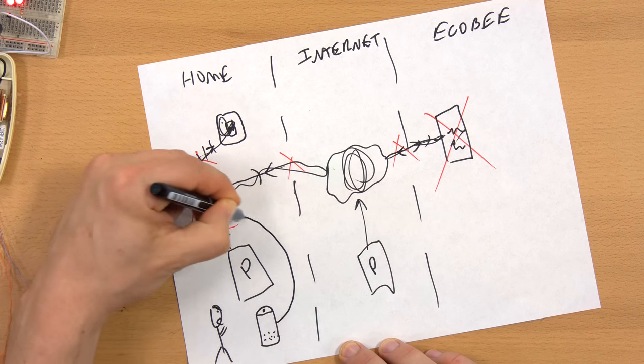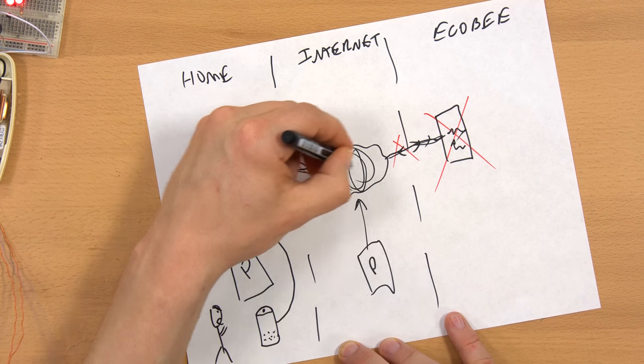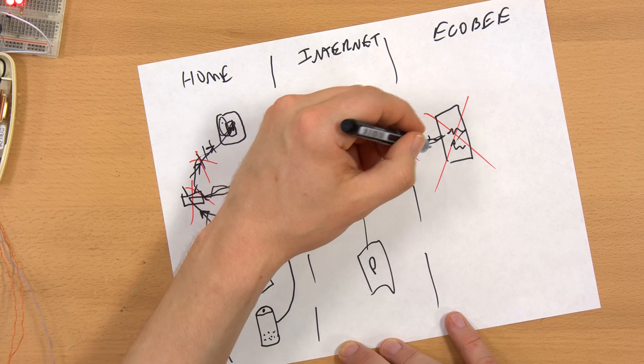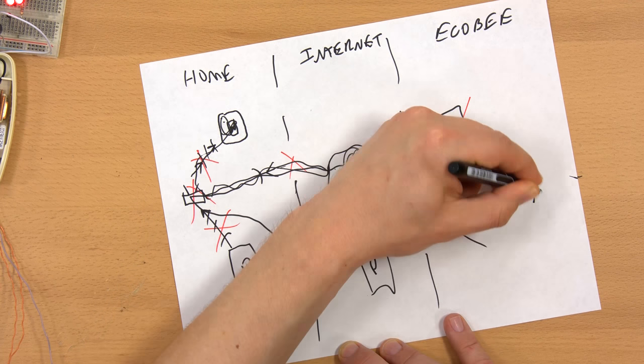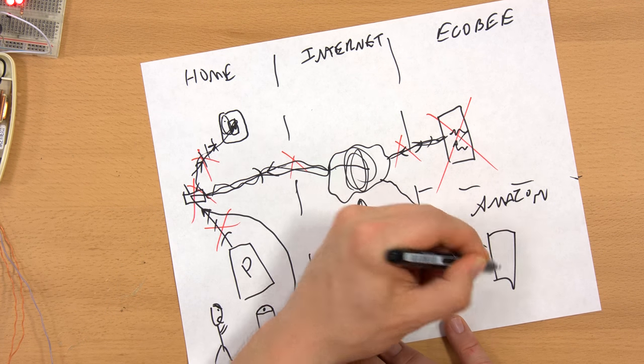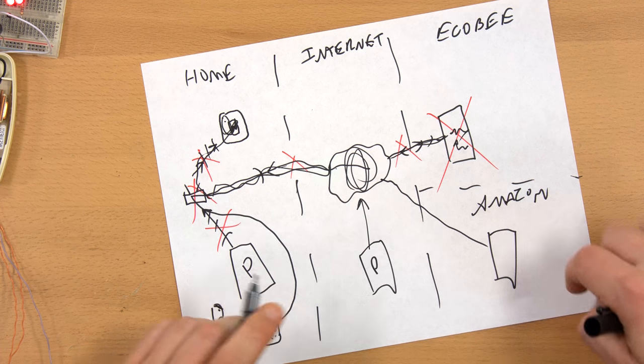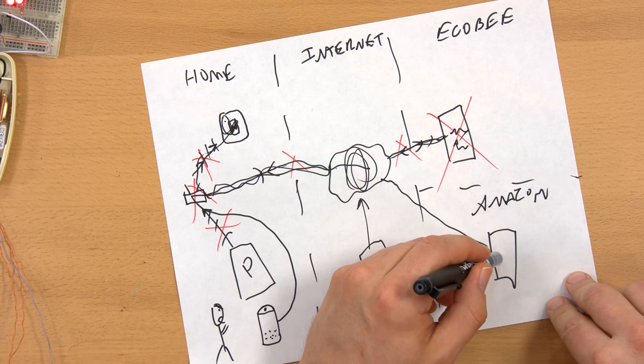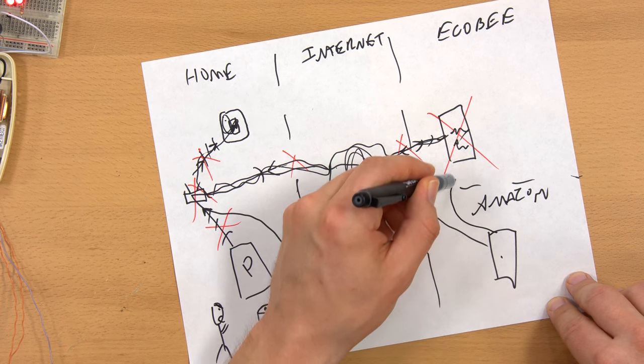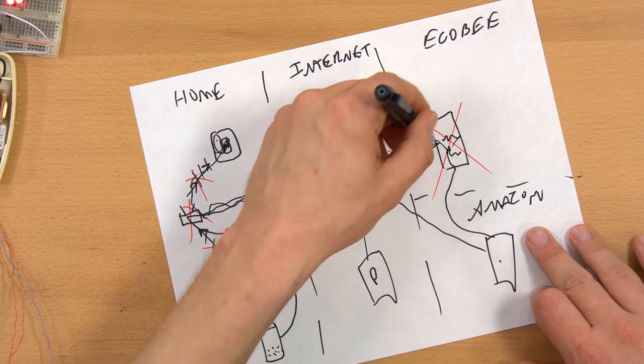It has to go from the Alexa to your access point to the internet, then it doesn't go directly to Ecobee—it goes to Amazon. Amazon has a cloud, which is just a server somewhere in Amazon's data center, and that will process the Echo command. The Amazon server will pass that information along to the Ecobee server, which will then pass that information through the internet to your access point back to the Ecobee.